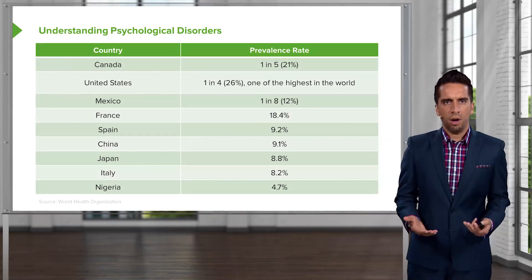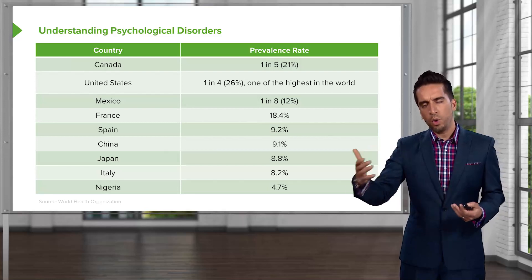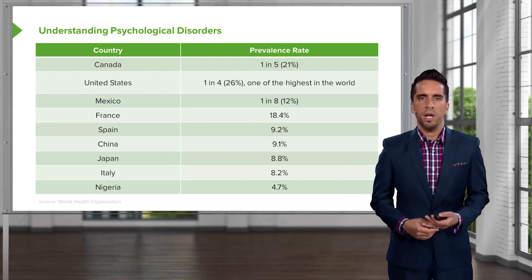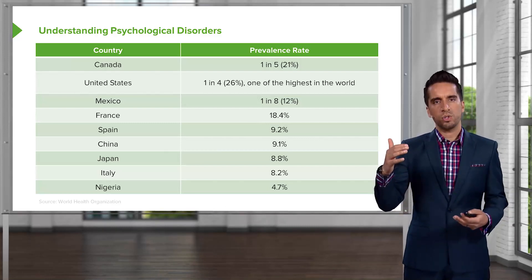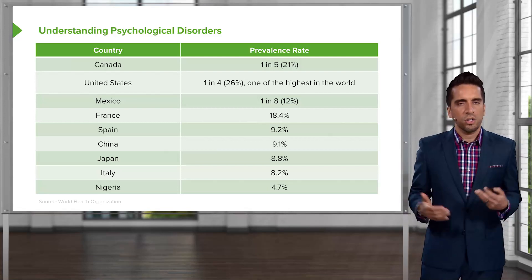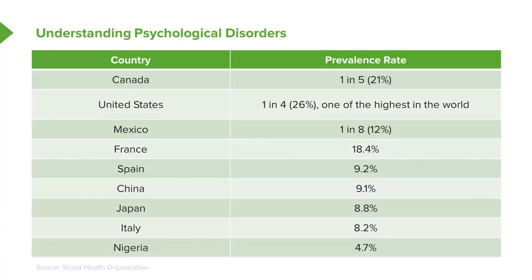How common are psychological disorders? You'll see what's classified as a psychological disorder, but you won't need to memorize this. Across the world, psychological disorders are quite prevalent. In the US, one in four individuals — that's 26%, one of the highest in the world — have some form of psychological disorder. Other countries like Canada, Mexico, and France are not far behind. It's a quite serious and very prevalent issue globally.